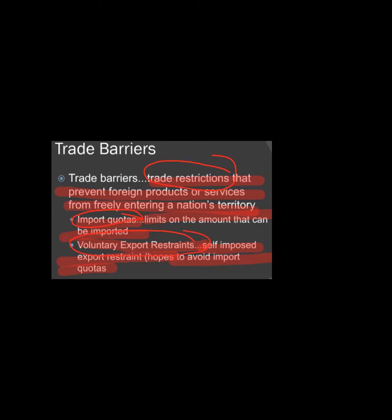We call this voluntary export restraints. The first barrier discussed was import quota, and the second is voluntary export restraints. Why do we call it voluntary? Because the exporting country itself decides to limit its exports to a certain level.